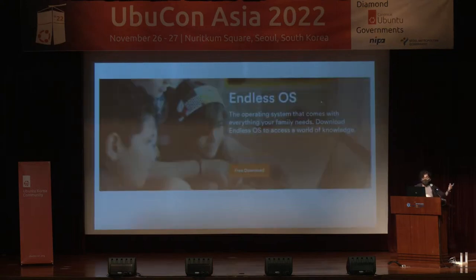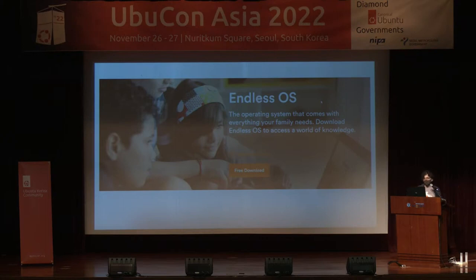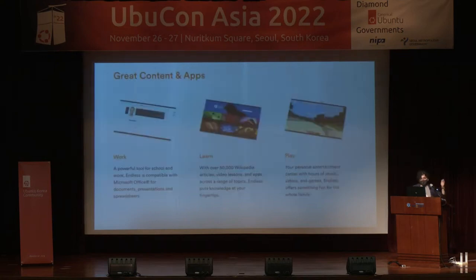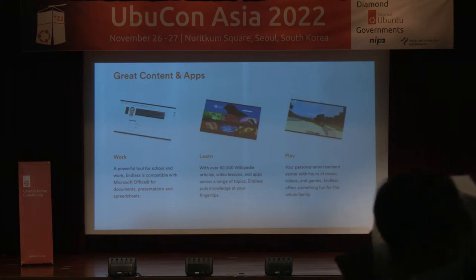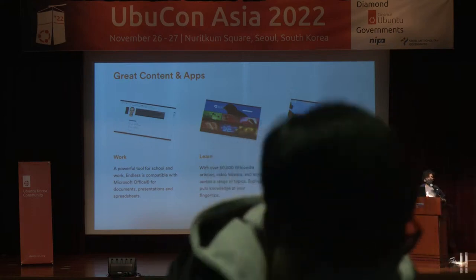Endless OS is a kind of educational distribution. Sometimes it's big and bulky — nearly 32 GB of storage — because it bundles a lot of educational packages and content, like offline Wikipedia dumps, making it easily accessible for anyone. You can work, learn, and play. It's built on top of Linux and puts all that together so you don't need to invest a lot of time. They have done really good hard work.